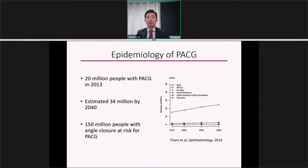Primary angle closure glaucoma, or PACG, is a common cause of permanent vision loss worldwide. It's thought that it currently affects approximately 20 million people, and this number will rapidly increase over the next two decades due to aging of the world's population. There are over 150 million people with some degree of angle closure, putting them at risk for developing PACG.